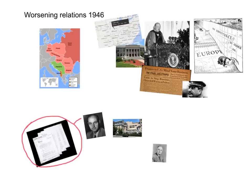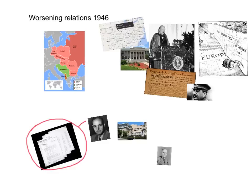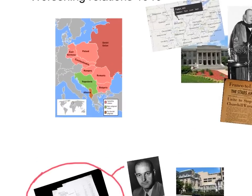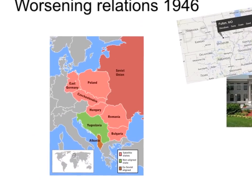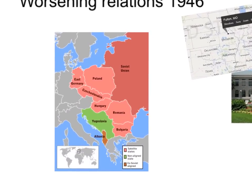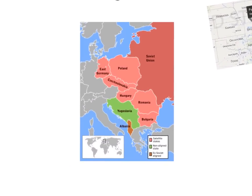At the end of World War II and after the Potsdam Conference, there was tension between the USA and the USSR. Looking at this map of Europe, we can see that it was becoming increasingly polarised. The countries being highlighted here are the satellite states.